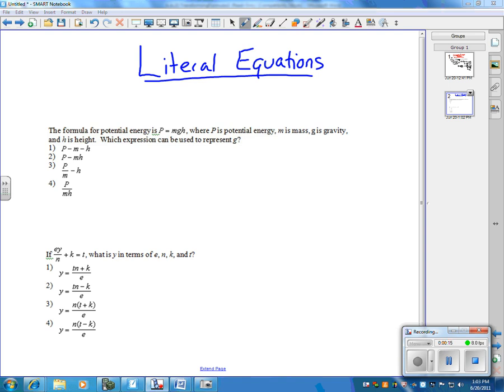So the first one says, let me give us this formula. I'm going to circle that. P is potential energy, M is mass, G is gravity, and H is height.